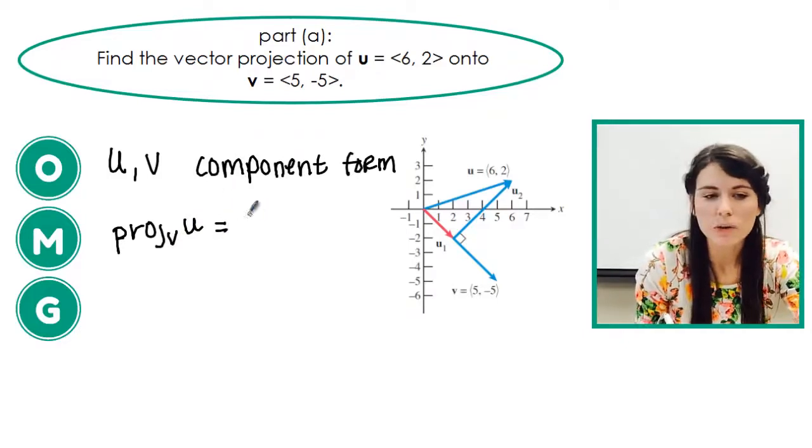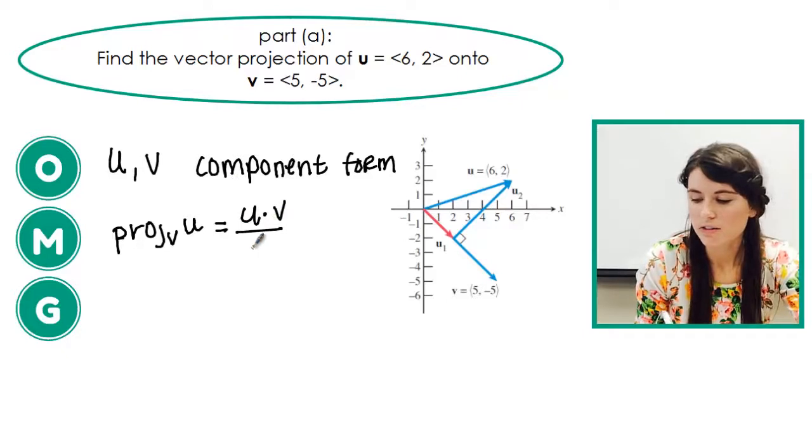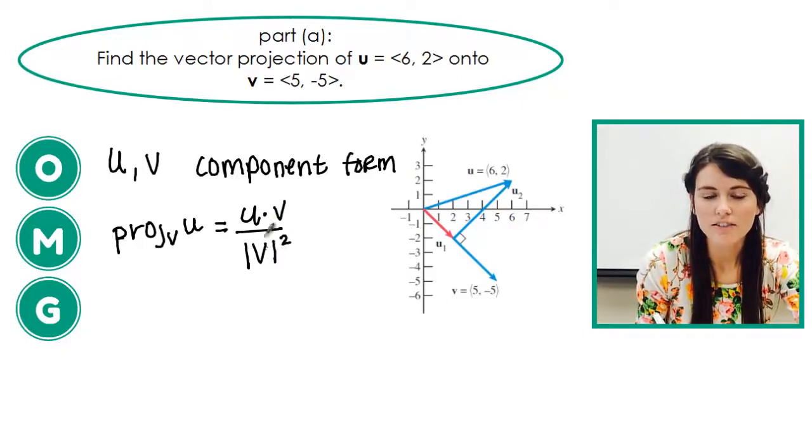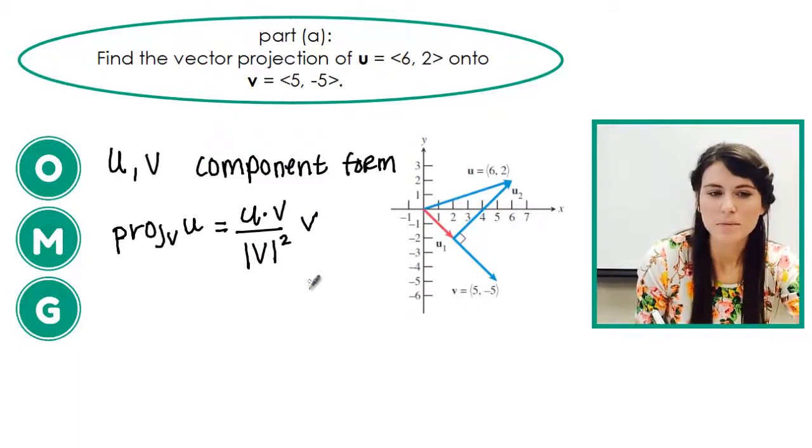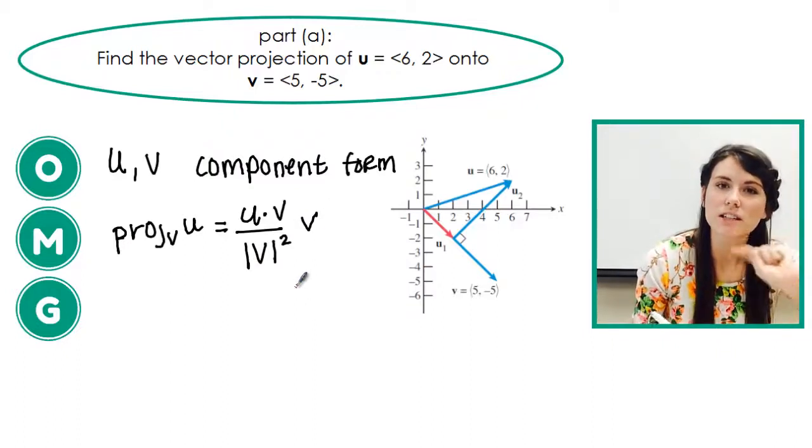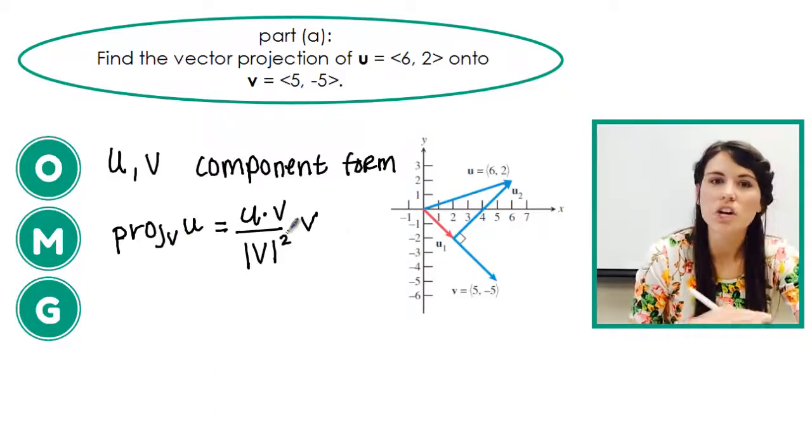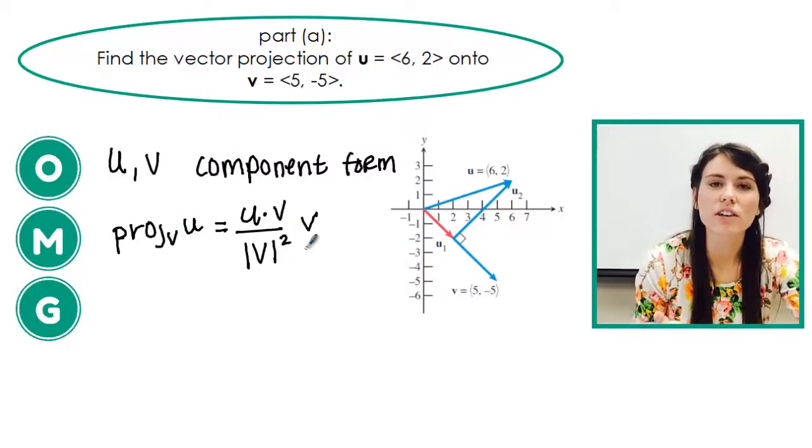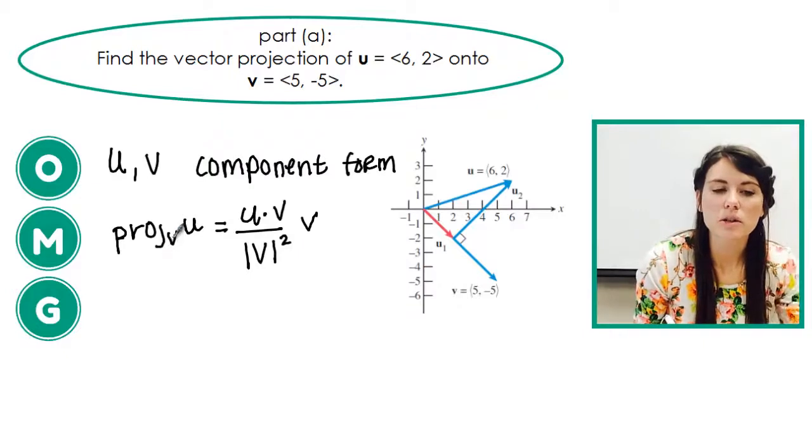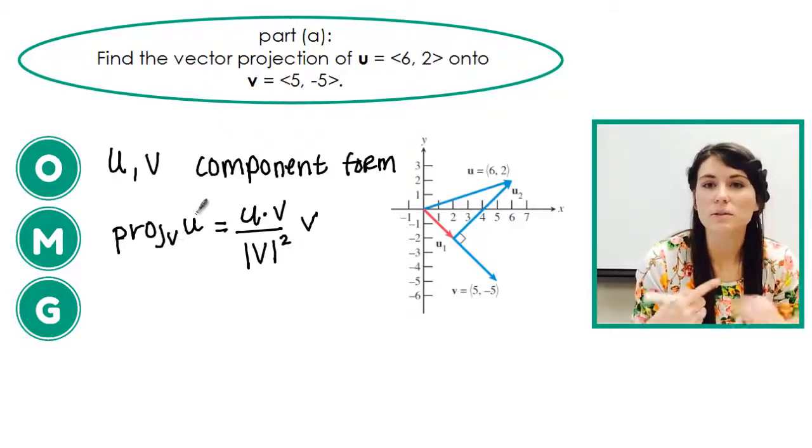So I'm going to use dot product of u and v over the magnitude of my v vector squared times v. Now if I was projecting the other way, I would just switch all my u's and v's. That's the only difference. So if I said project v onto u, I would just put u's and v's here and I would just switch everything.